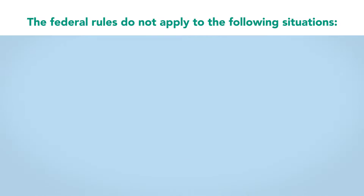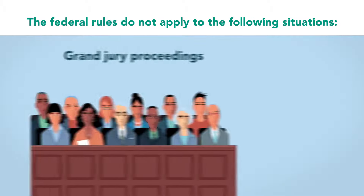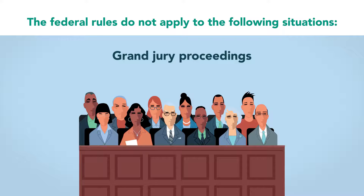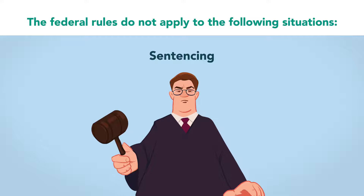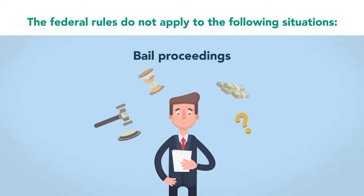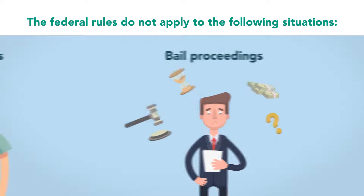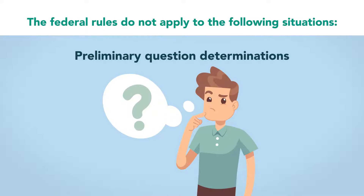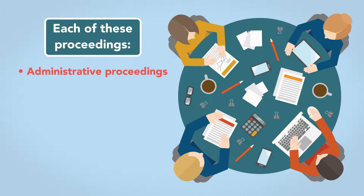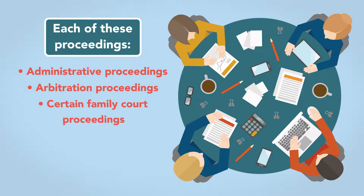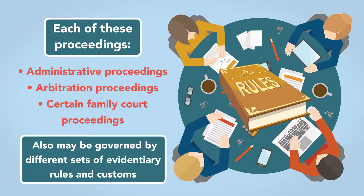The federal rules do not apply to the following situations: grand jury proceedings, determining whether a warrant will issue, sentencing, bail hearings, and preliminary question determinations. Administrative proceedings, arbitration proceedings, and certain family court proceedings may also be governed by different sets of evidentiary rules and customs.